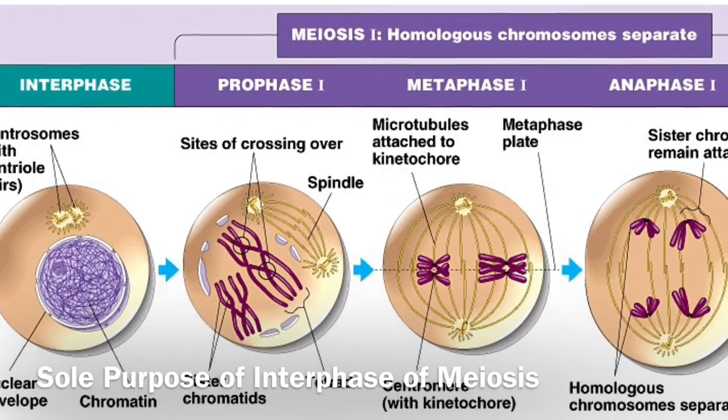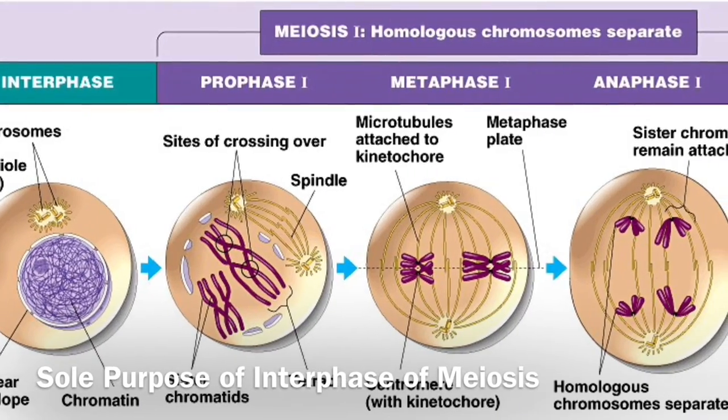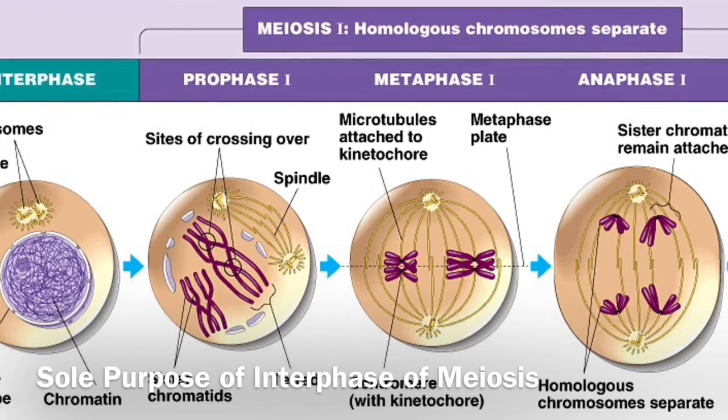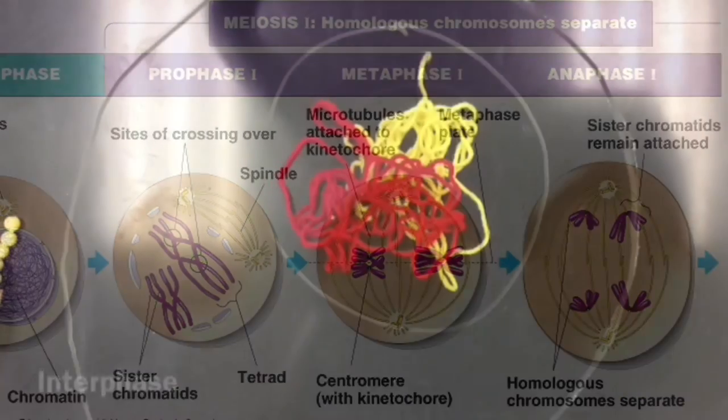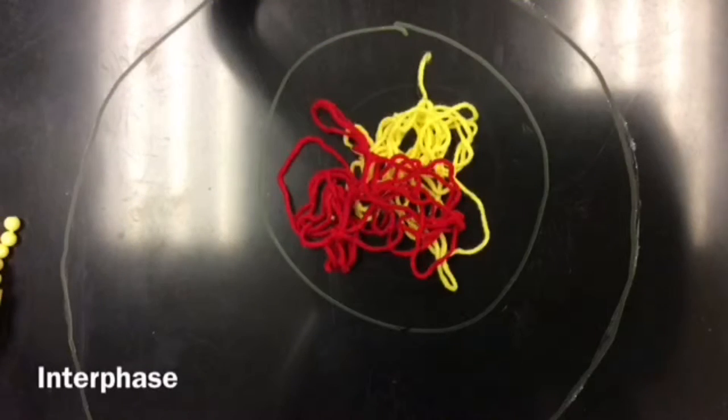Primarily, DNA replication occurs in interphase for prophase I to take place and for meiosis to begin. Meiosis is a type of cell division with the sole purpose of sexual reproduction. Through the process of meiosis, haploid gametes like sperm and eggs are produced.